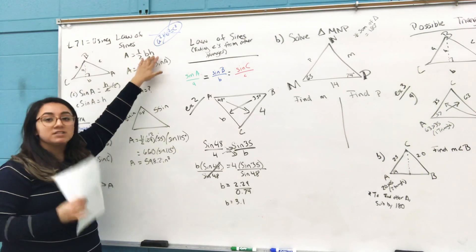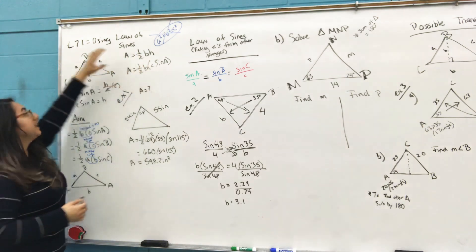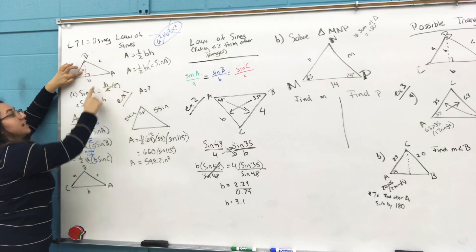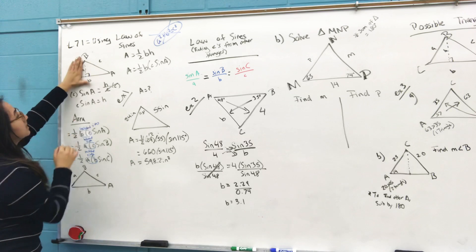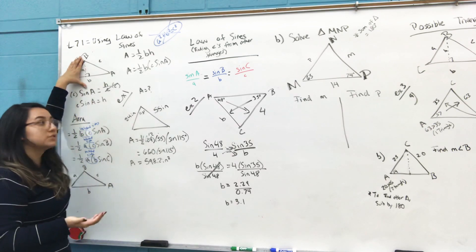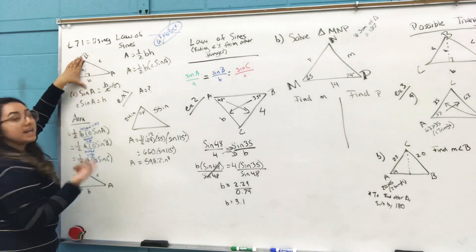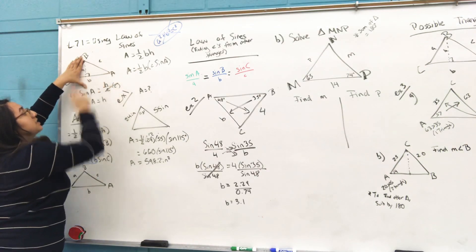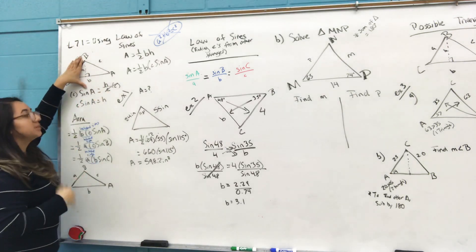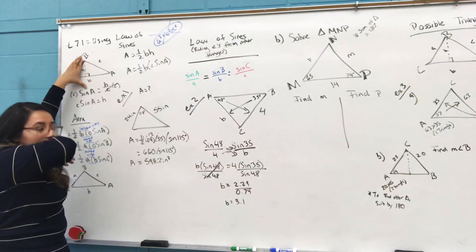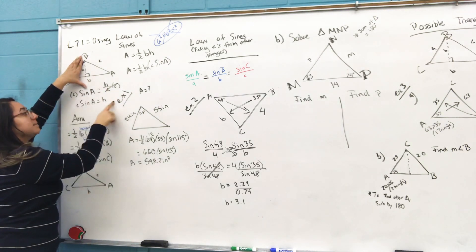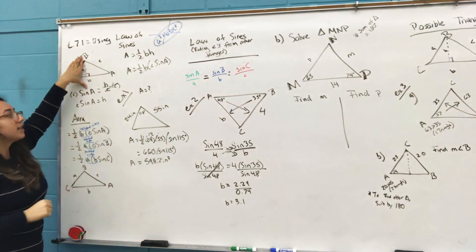You have to find what the height is on your own. To find the height, we're going to use sine. The sine of angle A — going back to SOH-CAH-TOA — sine is always opposite over hypotenuse. The opposite side is h and the hypotenuse is c, so sine of A = h/c. To find h, you multiply both sides by c, giving you h = c · sin(A).